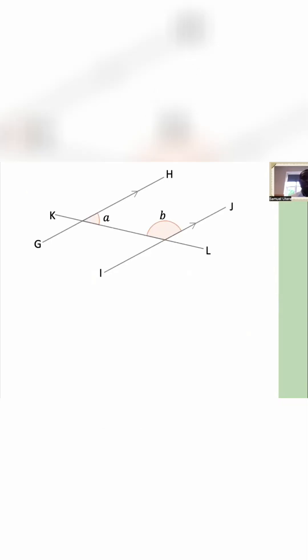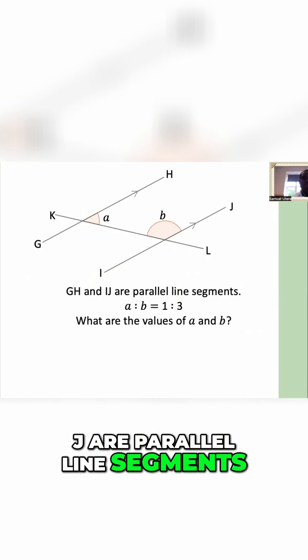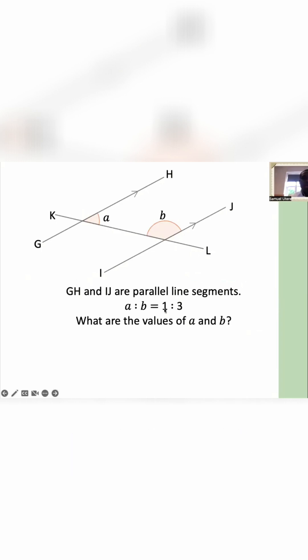Here is another question. We've been told that GH and IJ are parallel line segments. A and B are of the ratio 1:3. So what this is telling us is that angle B is three times bigger than angle A.